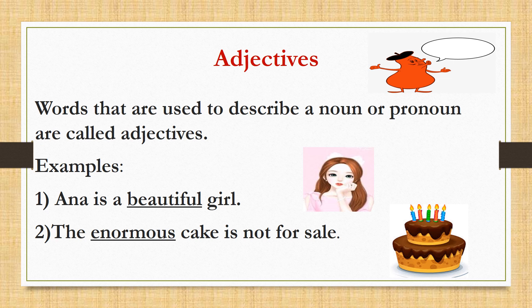Let's understand adjectives better with the help of these examples. Let's take the first sentence: Anna is a beautiful girl. Now, I want you to identify the noun or nouns in this sentence. There are two nouns — first one is Anna, which is a proper noun, and the second one is girl. Can we spot the adjective here? Which is the word that gives more information about the noun? Yes, you got that right. It is beautiful.